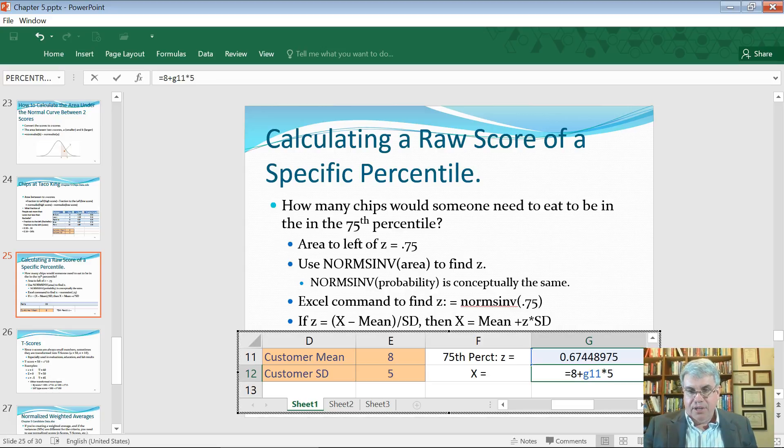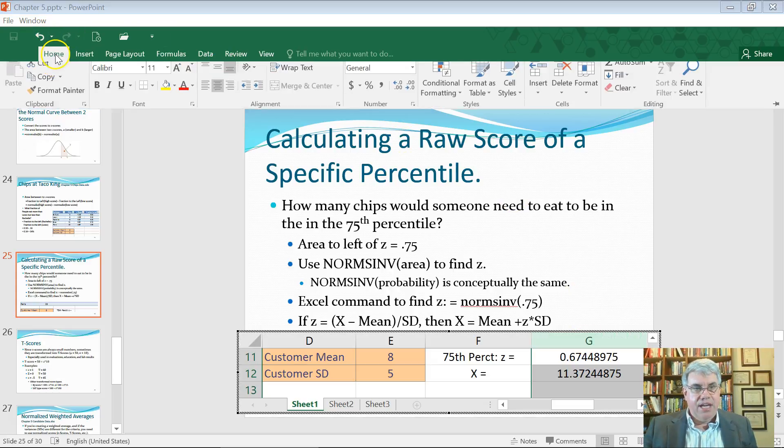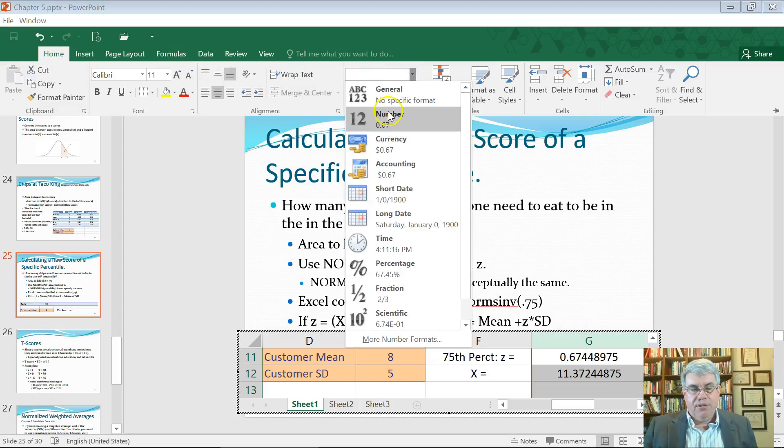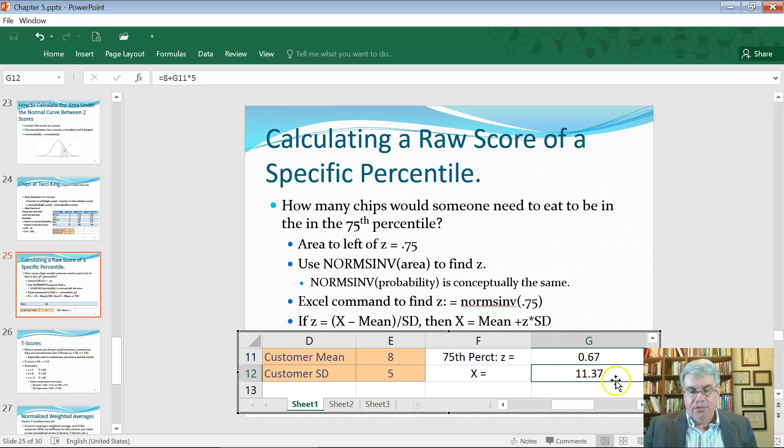And that comes out to 11.372 chips. Let's actually select those and remove the decimals - I'm going to go home, general, number - and we get 11.37 chips is the 75th percentile. 75 percent of the people eat 11.37 chips or less, and if you eat more than that, you're in the top 25 percent of the chip eaters.